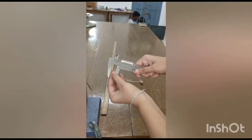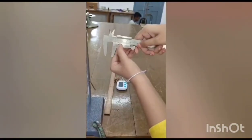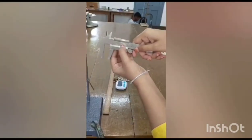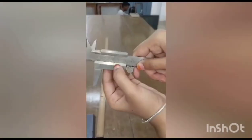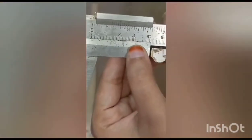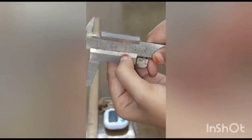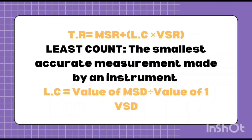Where vernier scale division coincides with main scale division gives vernier scale reading. We should also calculate total reading, and total reading equals main scale reading plus least count times vernier scale reading.